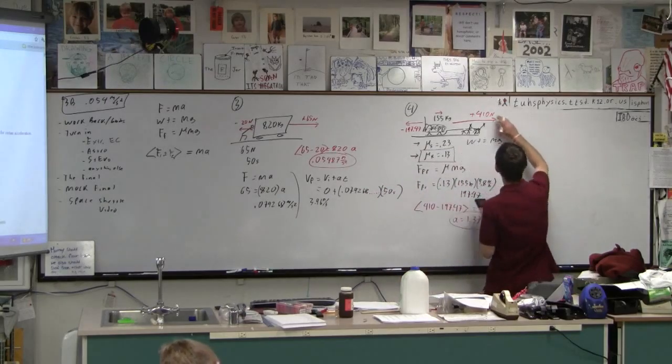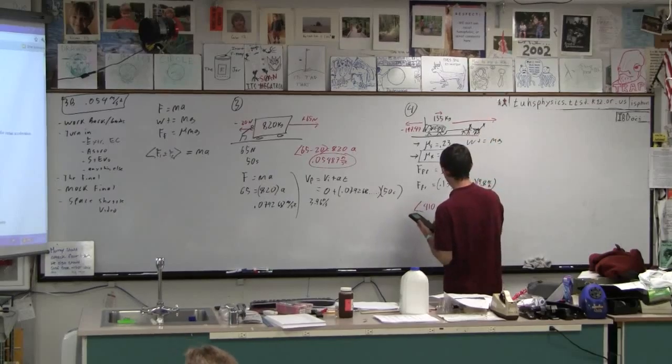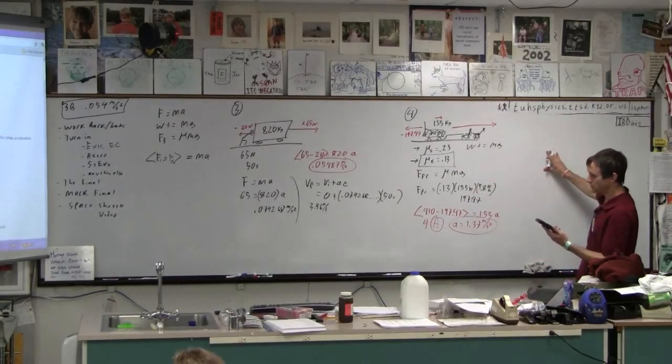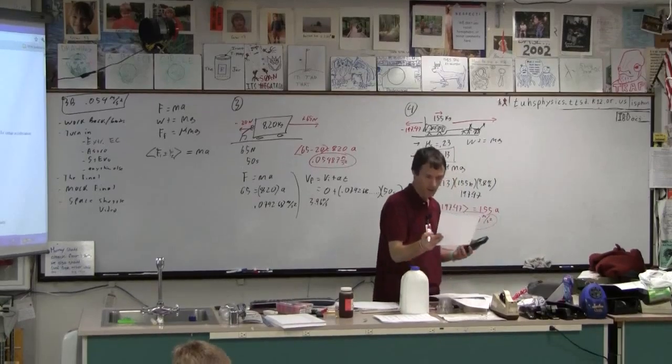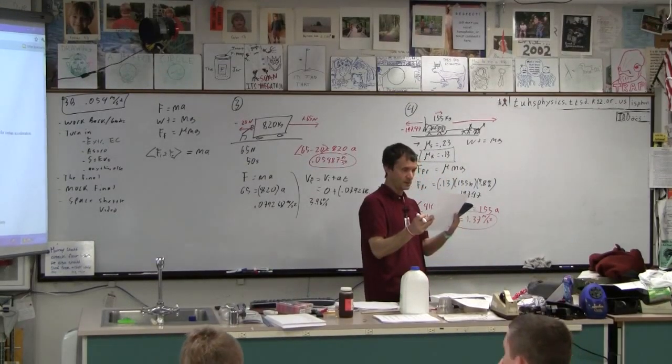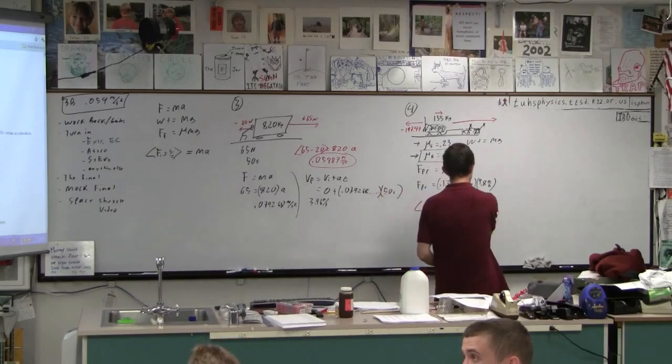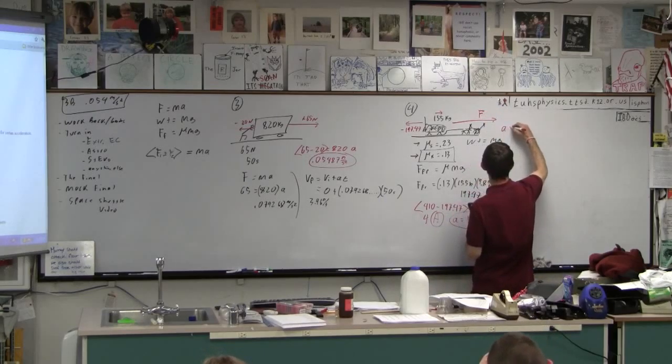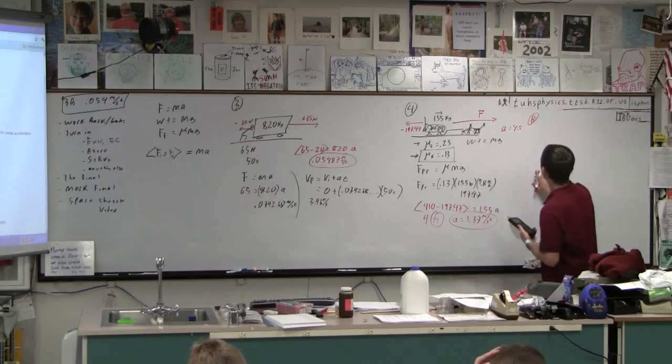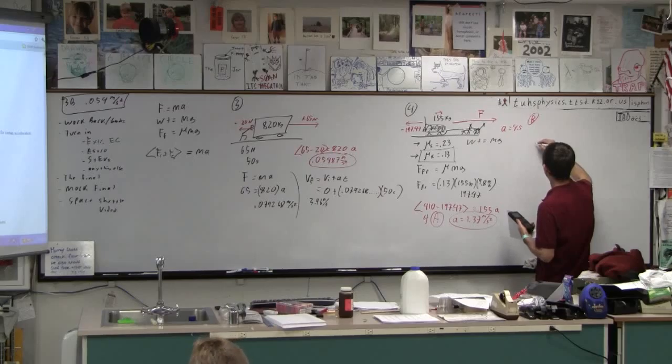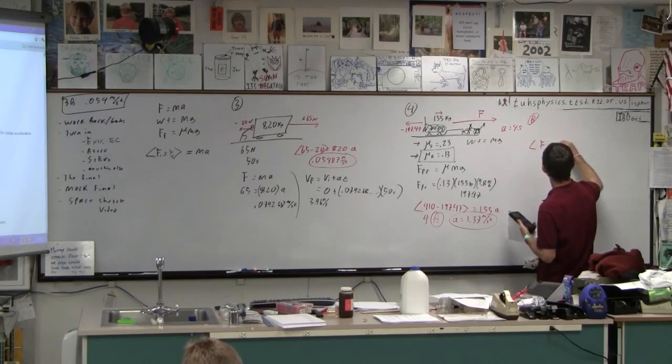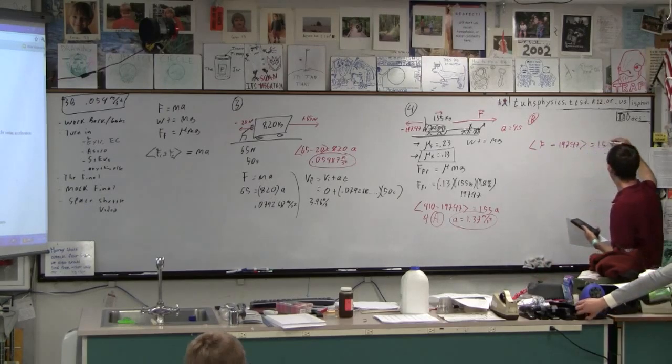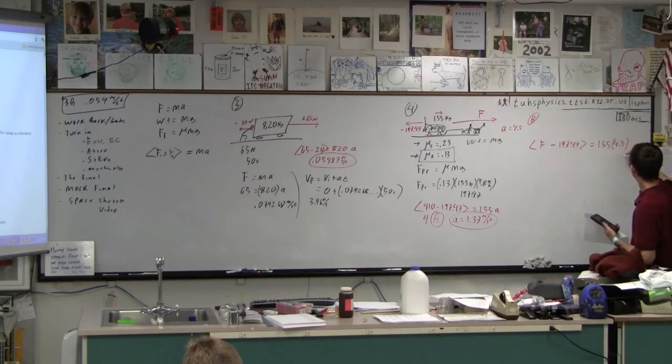And then the next question is, what force, let's make this an unknown force. So this is part A. This is 4A. 4B says, what force would you have to exert to make it accelerate at some rate? So we want it to accelerate at 4.5 meters per second squared. That's not fast enough for us. Okay, so now this becomes the variable. And we want the acceleration to be 4.5. And this is part B. Well, to make it 4.5, we go some force minus 197.47 equals 155. And then the acceleration is 4.5.